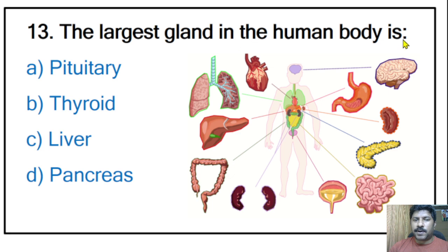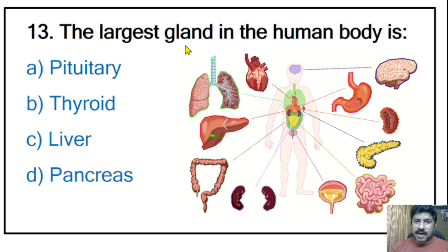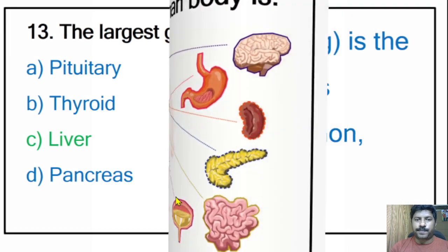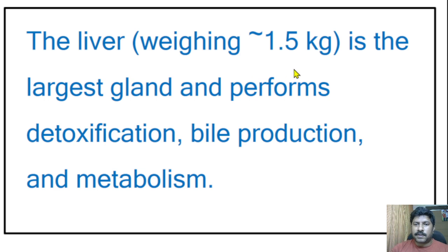Thirteenth question: the largest gland in the human body. Options: pituitary, thyroid, liver, pancreas. Note that the question asks for the largest gland, not the largest organ. The correct answer is liver. The liver, weighing around 1.5 kilograms, is the largest gland and performs detoxification, bile production, and metabolism. Note: skin is the largest organ in the human body.